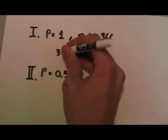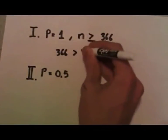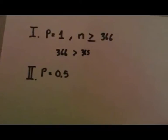This is because 366 is greater than 365, the number of days in the year, so we're assured to get at least one match. This illustrates the pigeonhole principle.